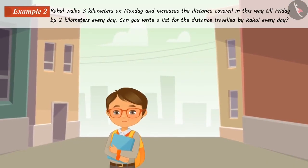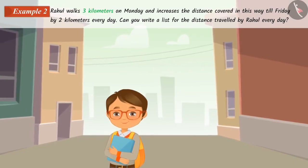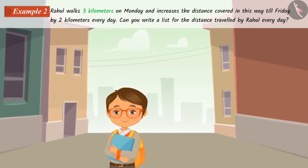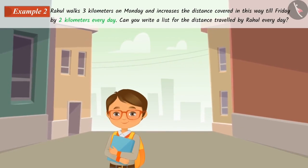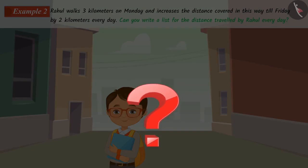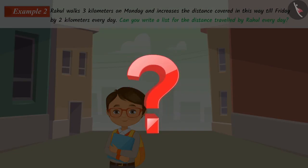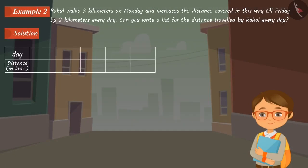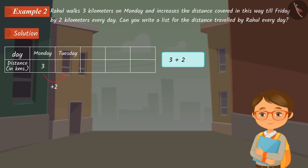Let's look at one more example. Rahul walks three kilometres on Monday and increases the distance covered by two kilometres every day till Friday. As per the question, Rahul travels three kilometres on Monday, and the distance on Tuesday would be three plus two, equal to five kilometres. Thus, the distance travelled each day can be found by adding two to the distance of the previous day.